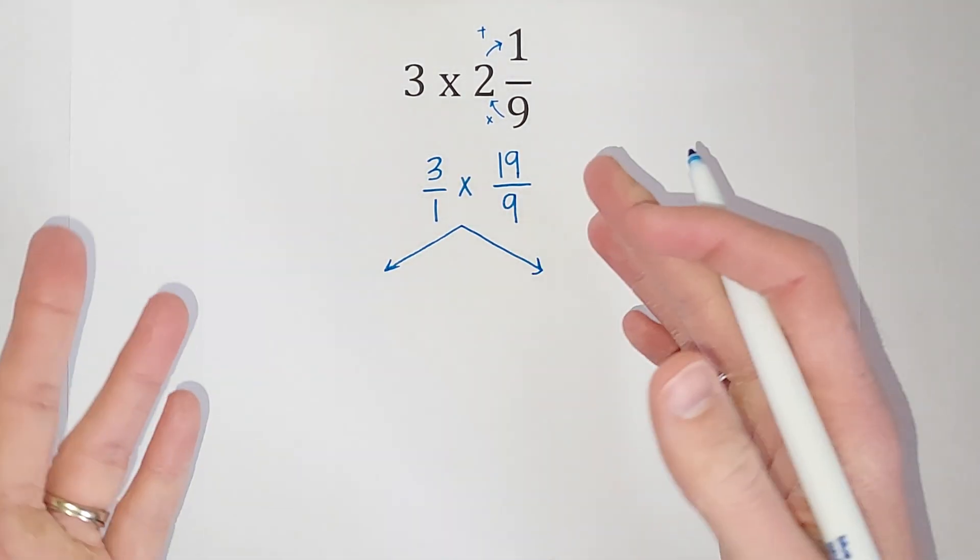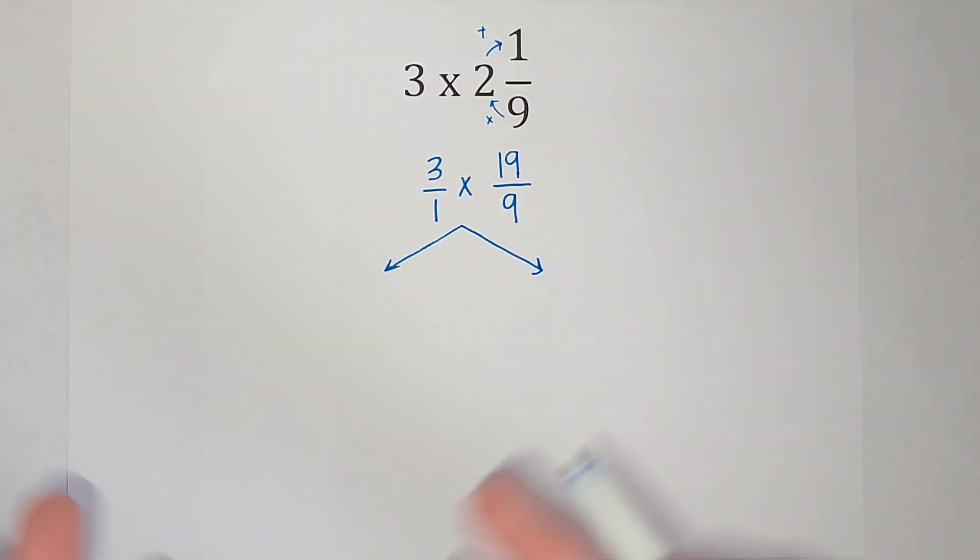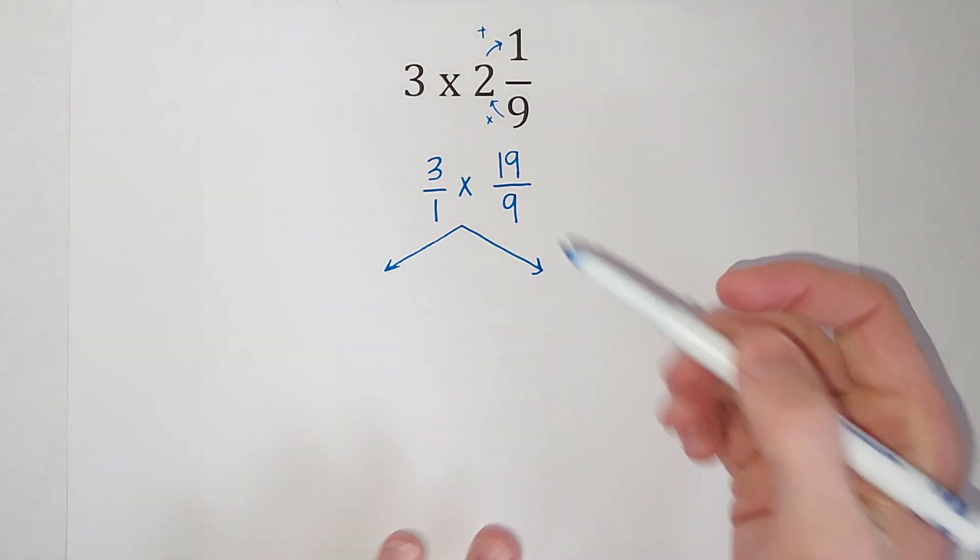The first way is we multiply and then simplify. The other way, we simplify first. So let me show you what that looks like.